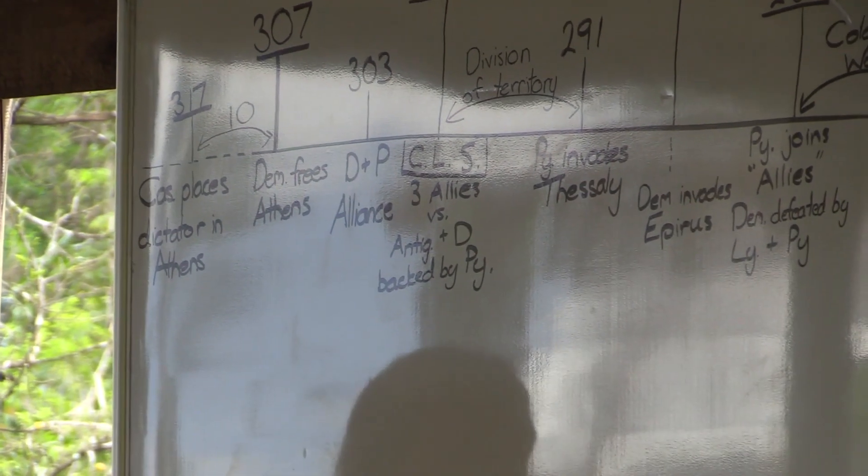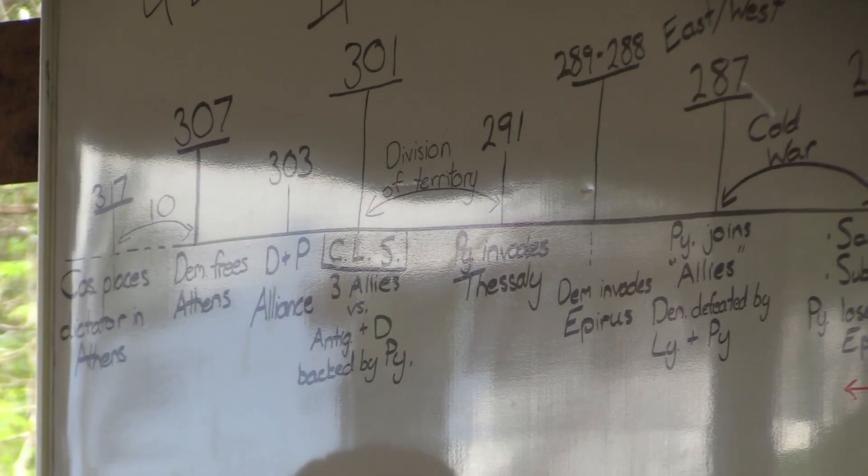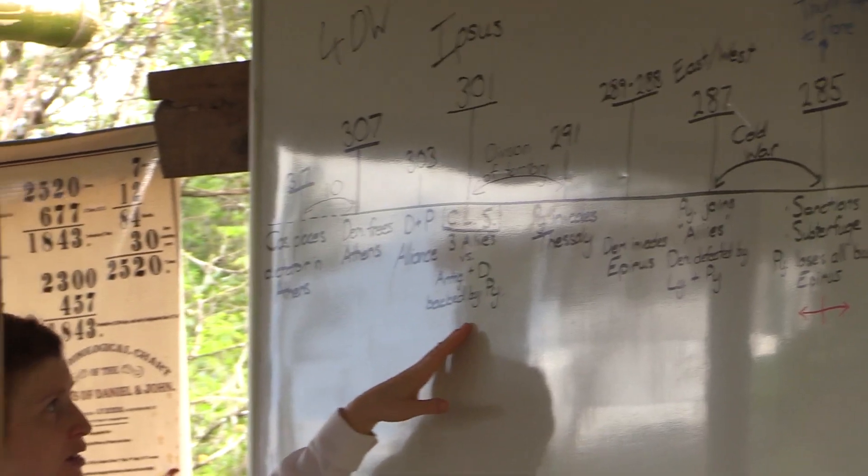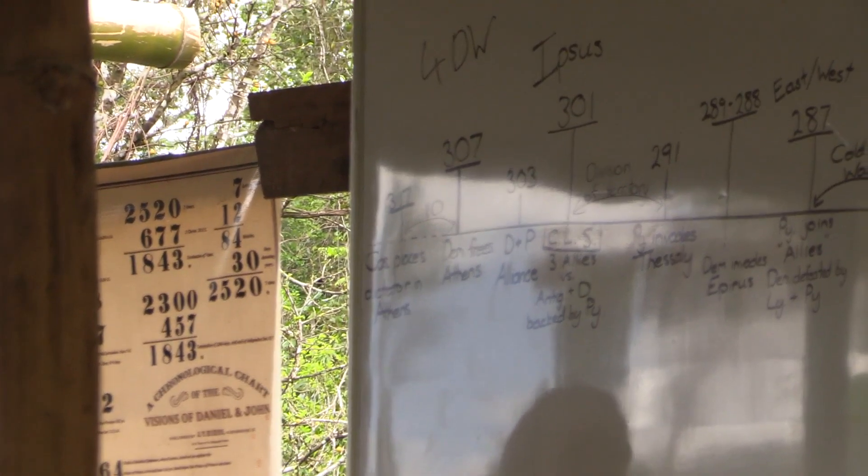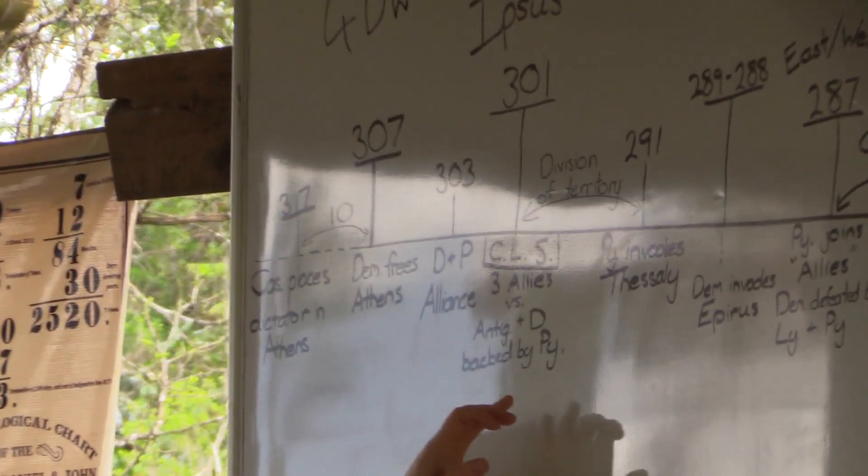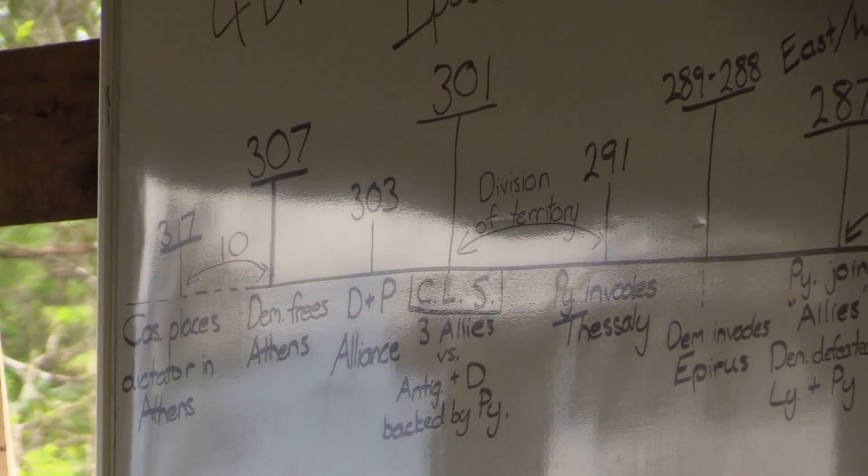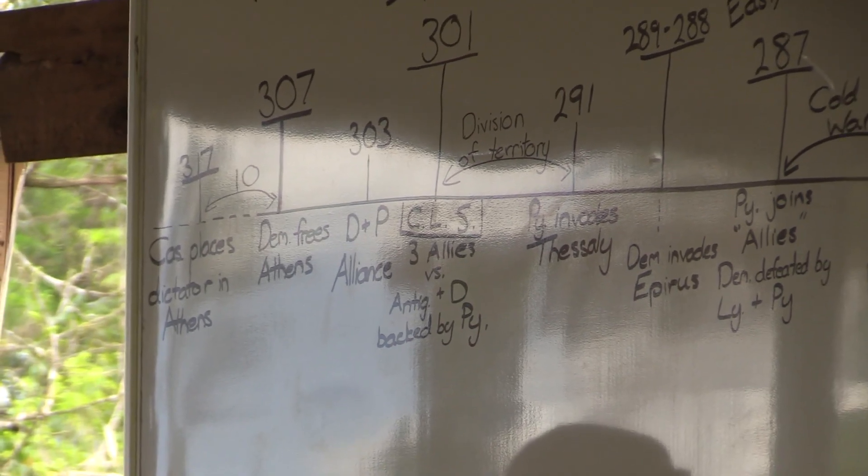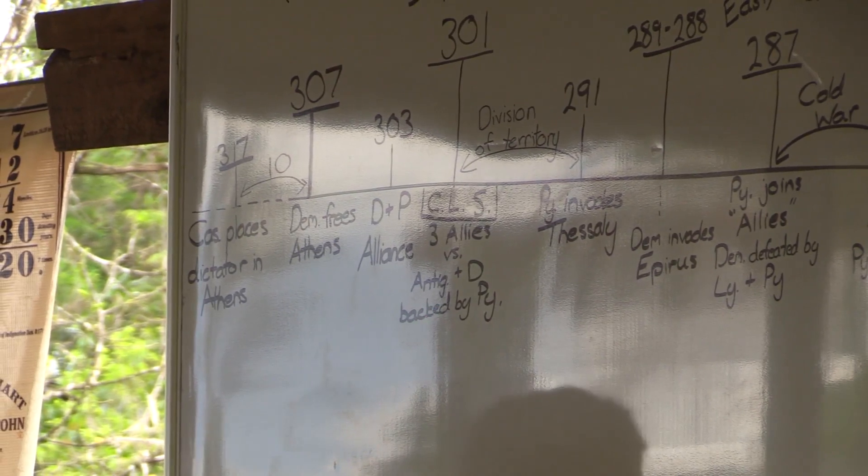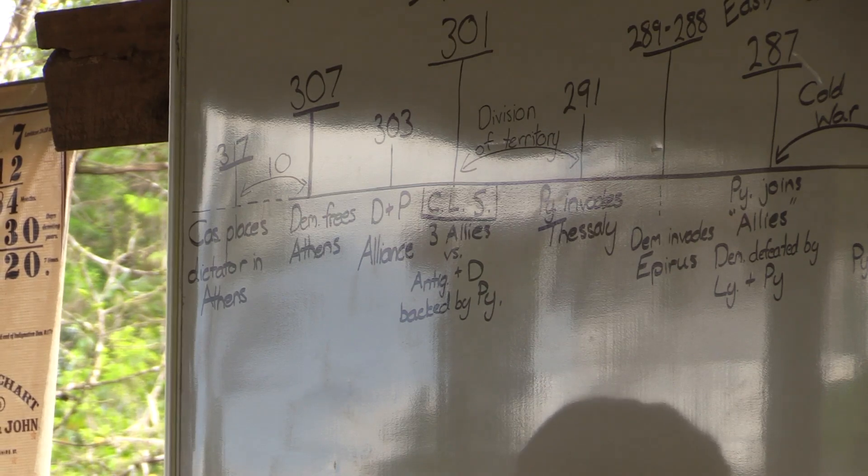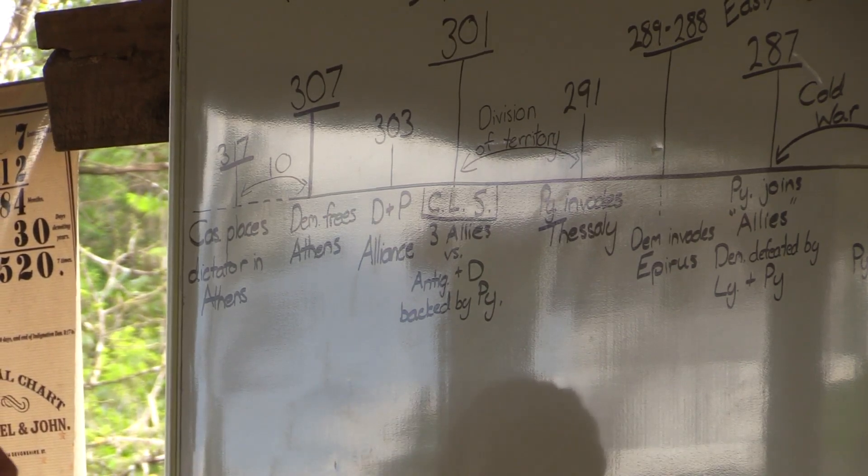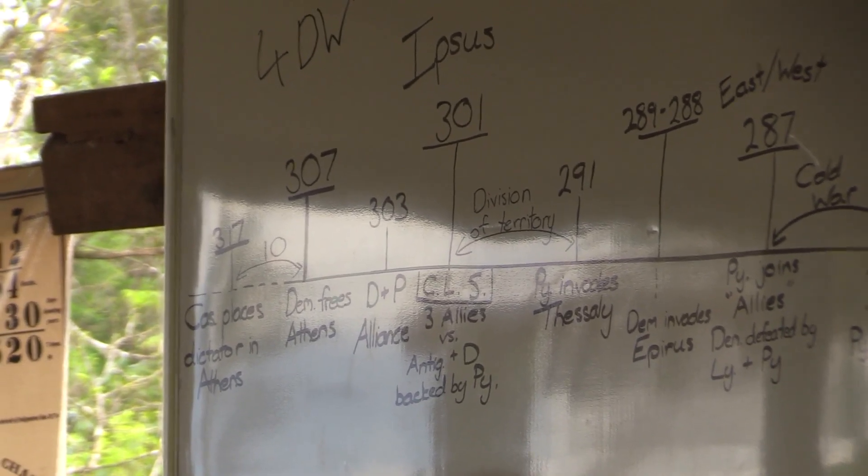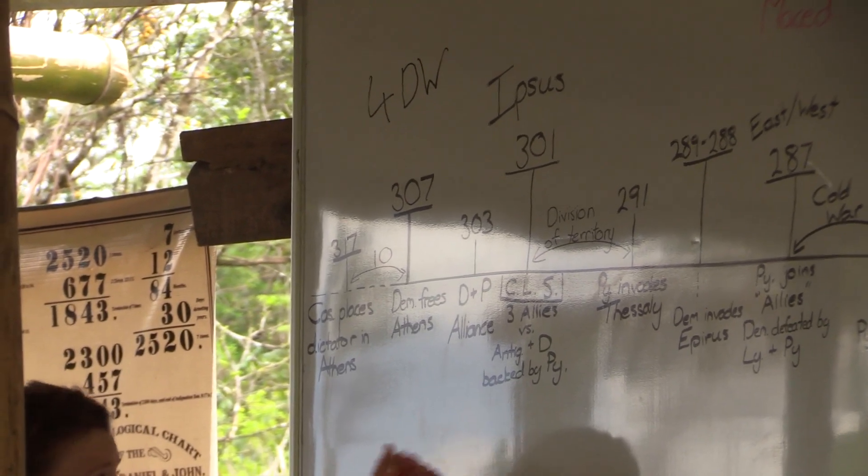This fourth Diadochi War culminates at the Battle of Ipsos in 301 BC. This is where our four generals are coming against Antigonus. Ptolemy turns back home. So what you find when it comes to the actual battle is you have three allies who are known as the Allied Forces. Three allies coming against Antigonus and Demetrius. Antigonus is backed by Pyrrhus who fights in this war as a general on behalf of Antigonus and Demetrius. In this battle, Antigonus is killed. Demetrius flees. What decided this battle was Seleucus' war elephants. The fact he brought between 300 and 500 war elephants with him on his return from the east and that he was able to cut Antigonus off from his own army.